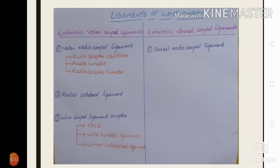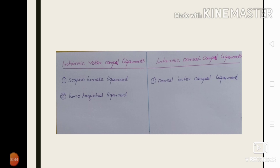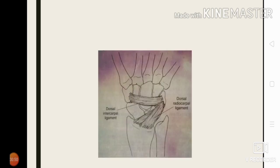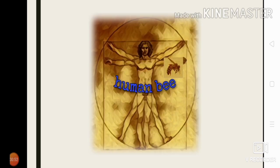To remember the names of the ligaments of the wrist complex, you can classify them as extrinsic volar carpal ligaments, extrinsic dorsal carpal ligaments, intrinsic volar carpal ligaments, and intrinsic dorsal carpal ligaments. In the next video we will discuss the motions of the wrist complex. Thank you.